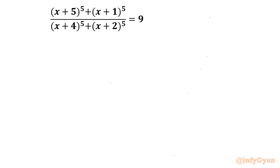Welcome to Infigyan, my dear friends. In this very exciting and powerful video of Algebraic Challenging Equations, we are going to take up one very interesting rational equation today: (x+5)^5 + (x+1)^5 over (x+4)^5 + (x+2)^5 = 9. We have to find out the real values of x.